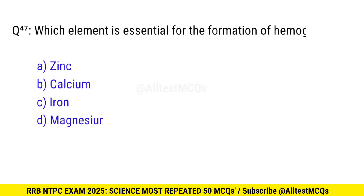Question 47. Which element is essential for the formation of hemoglobin? Right option is C, iron.